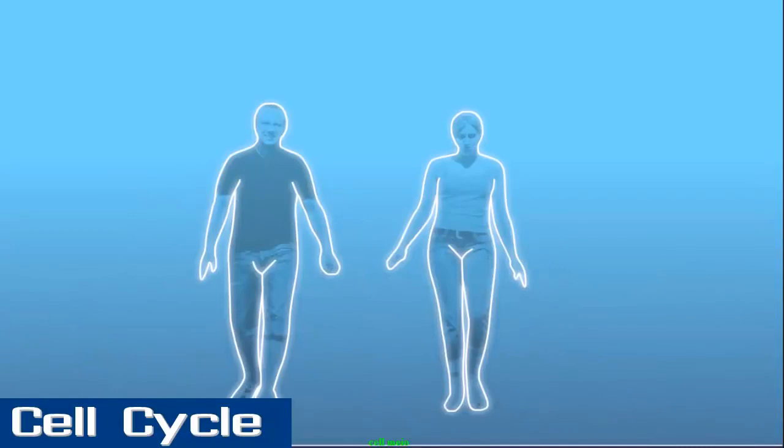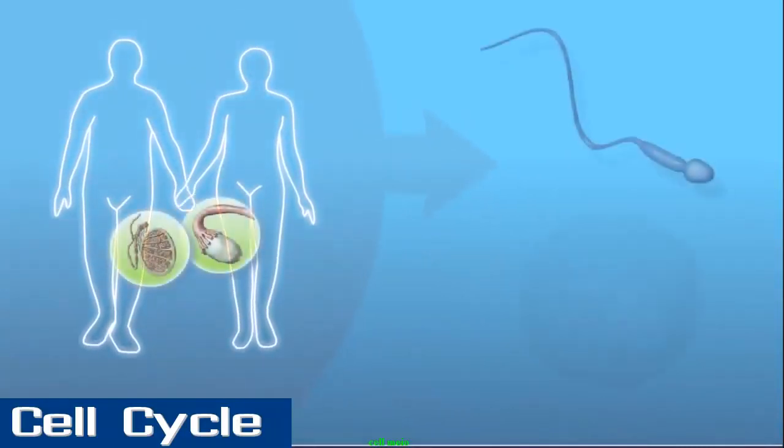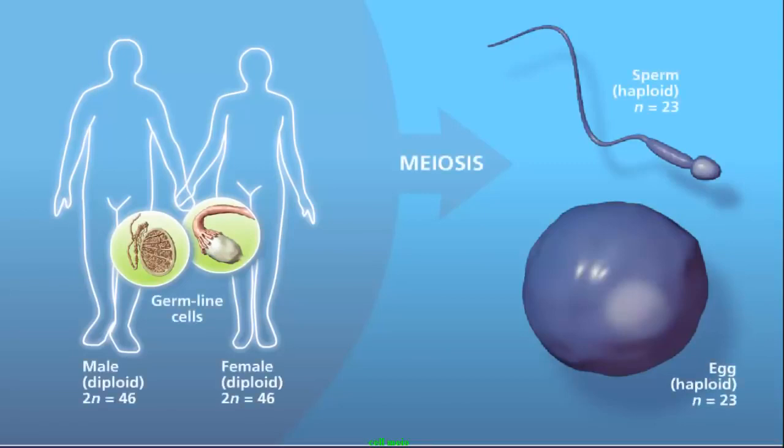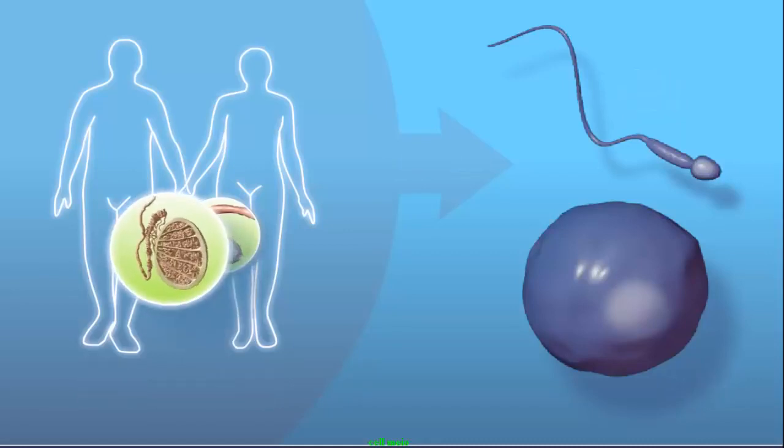Meiosis is the process by which haploid cells are produced from a diploid cell. For this to occur, the chromosomes must be correctly sorted and distributed in a manner to create genetically unique cells with half the number of chromosomes as the original cell.